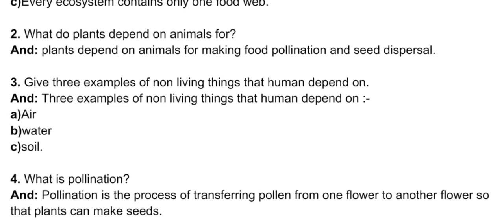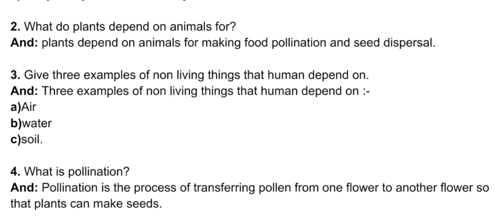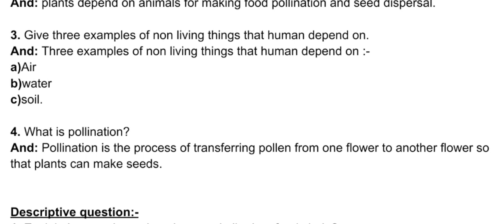Short question two: what do plants depend on animals for? Plants depend on animals for making food, pollination, and seed dispersal. Short question three: give three examples of non-living things that humans depend on — air, water, and soil. Short question four: what is pollination? Pollination is the process of transferring pollen from one flower to another flower so that plants can make seeds.